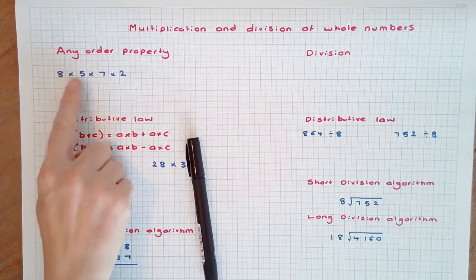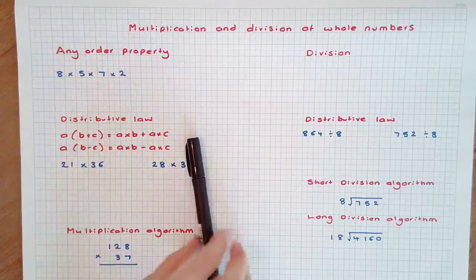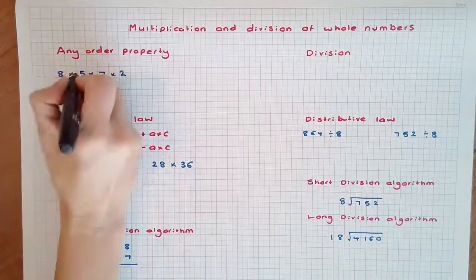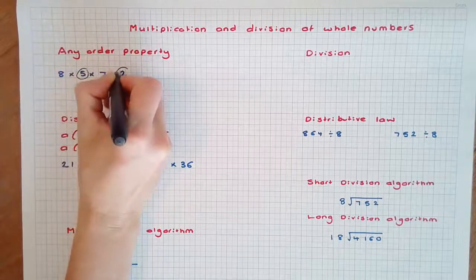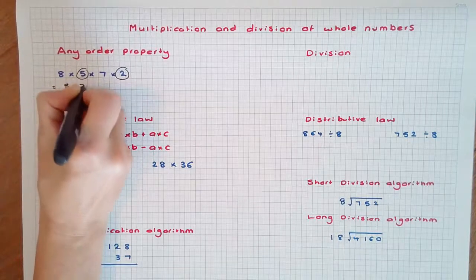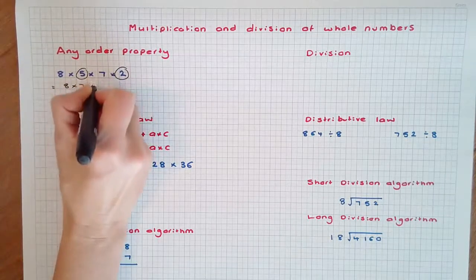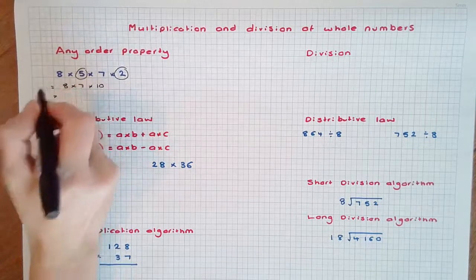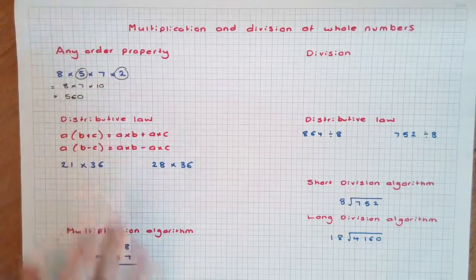For example, 8 × 5 × 7 × 2. It would be more convenient to multiply 5 × 2 first, so we would rewrite as 8 × 7 × 10. 8 × 7 is 56, times 10 is 560.